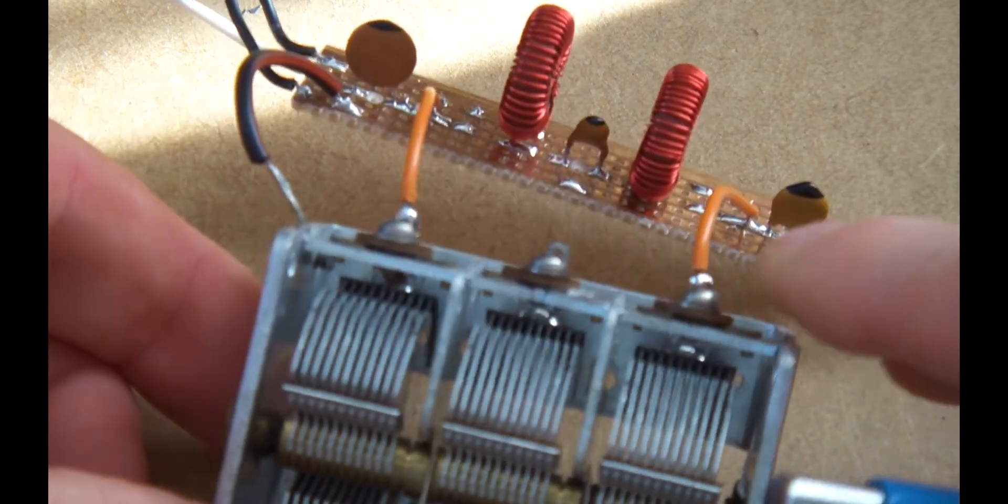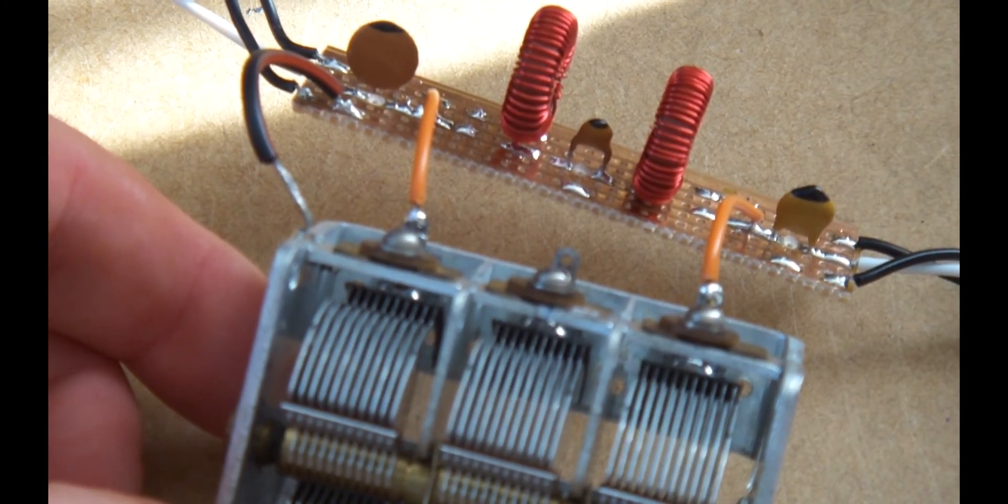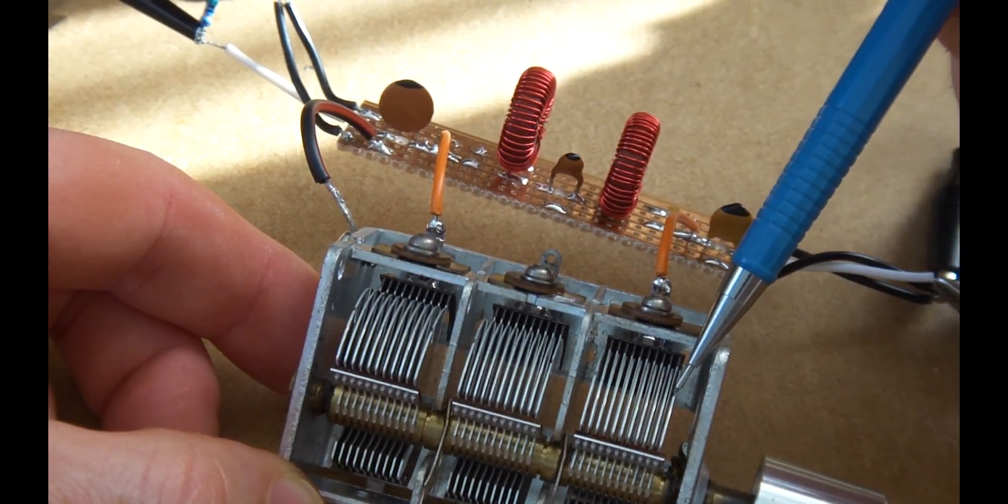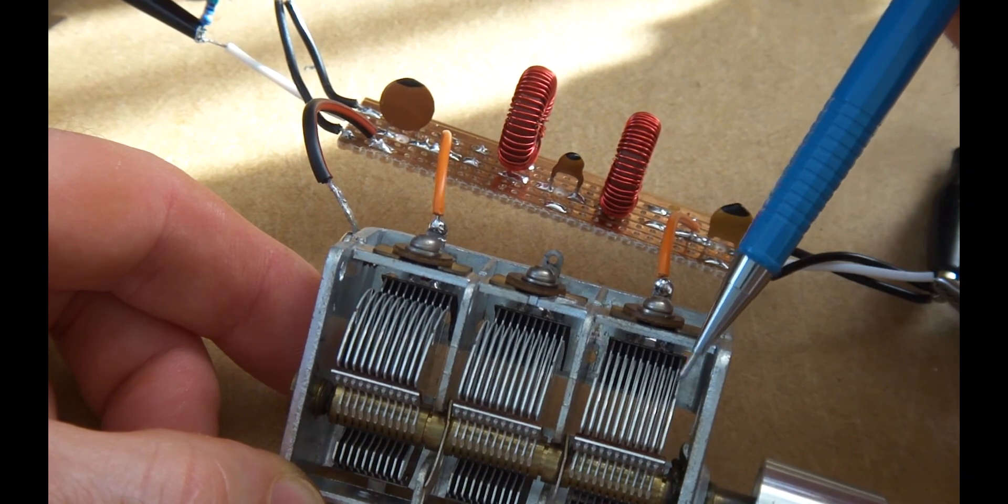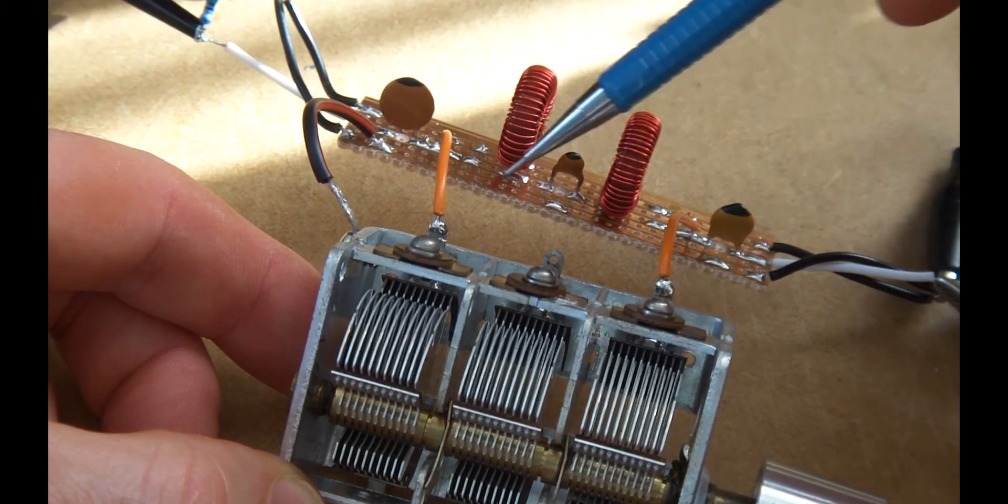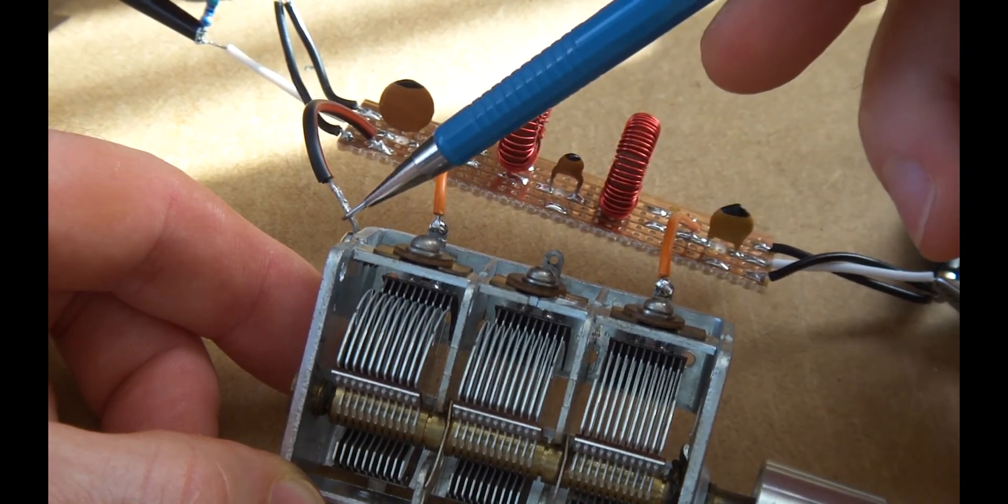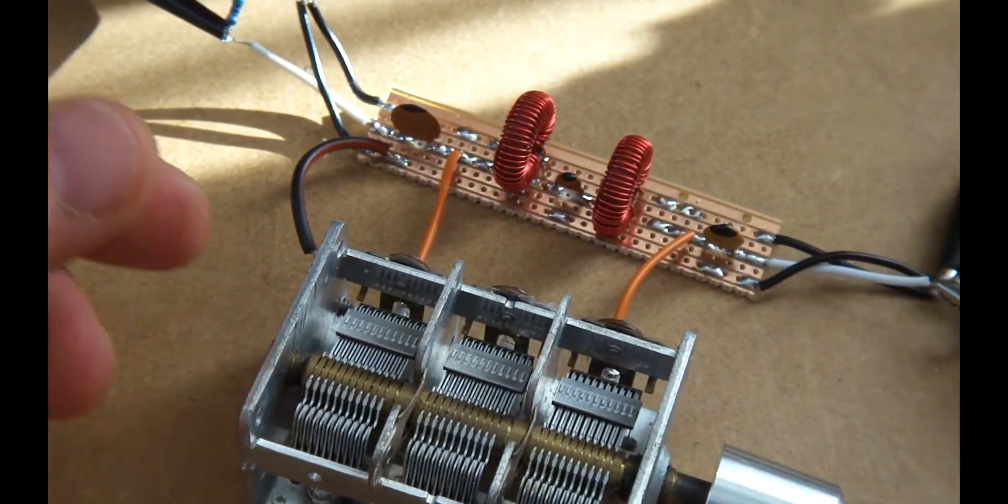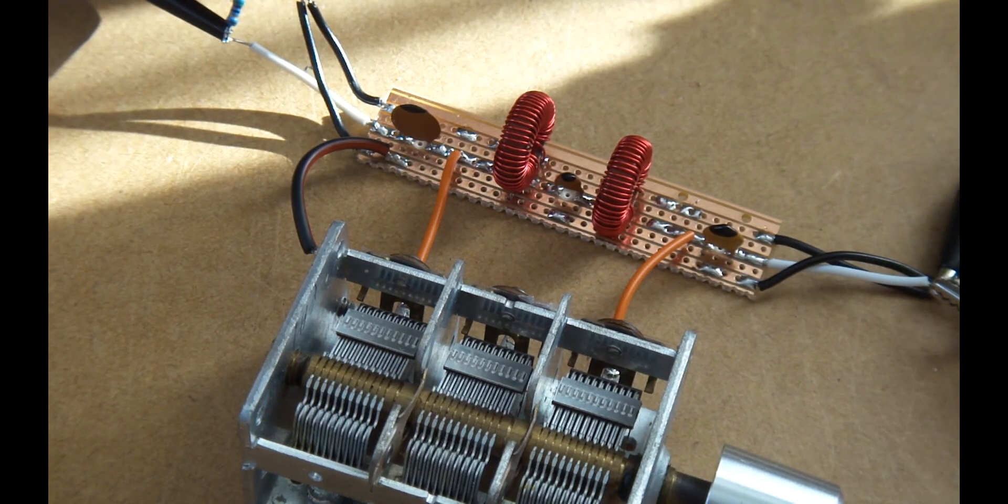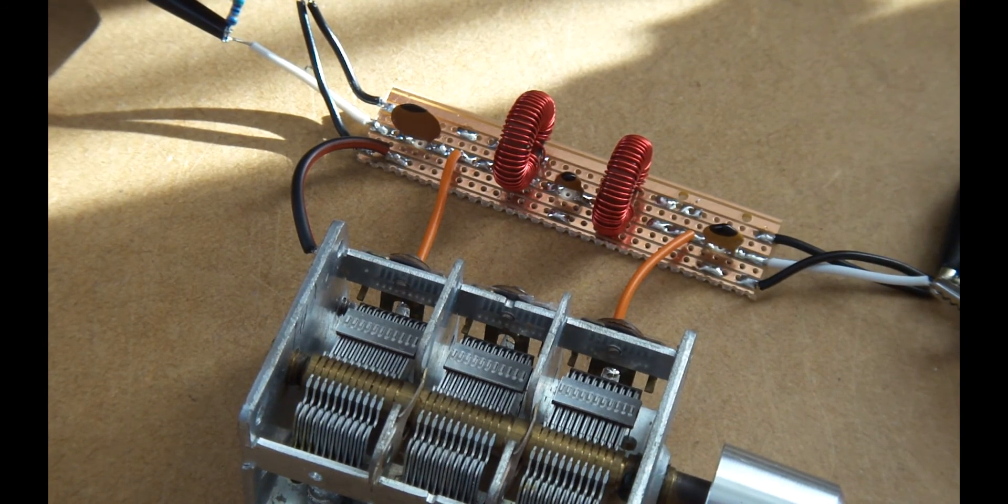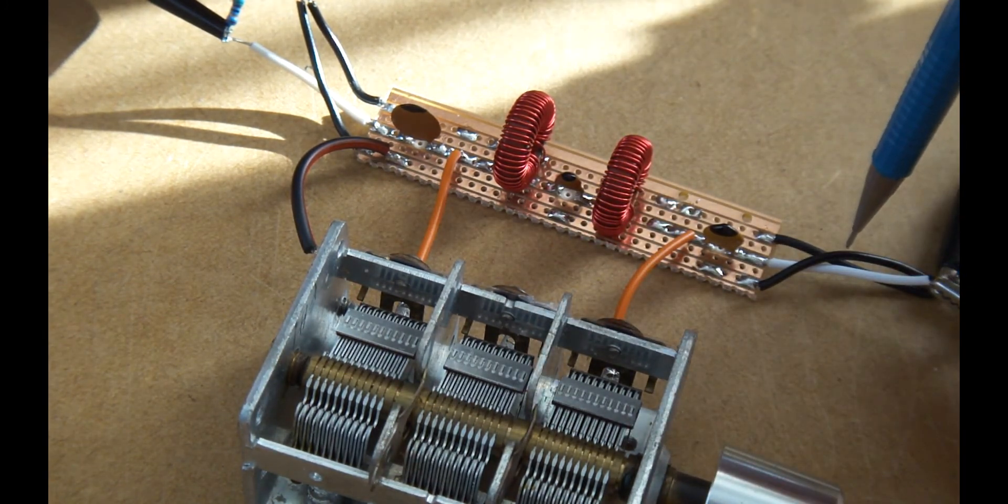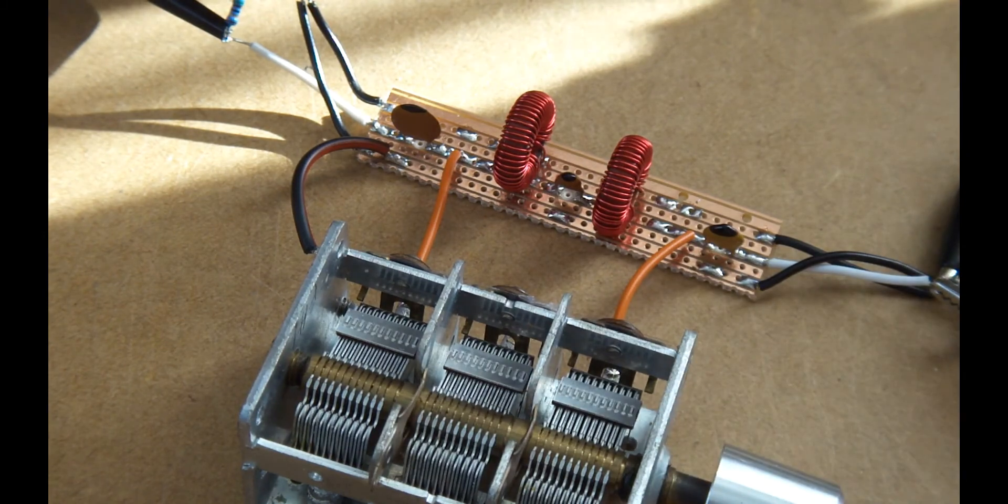This variable capacitor has three separate sections, and I'm just picking up on this section here, and the furthest one away from that one here, which is those two points there, and then the Earth going back to the Earth point, which allows me to vary that. So let me just pause there, I'll set up the signal generator, and then we can look at the effect of the variable capacitor, and then we'll look at the insertion losses for the filter.